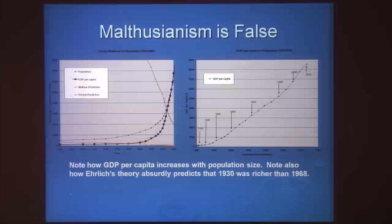Malthus was spectacularly wrong, and all who followed him equally so. Why is the theory false? It seems naively true that more people means less to go around. Well, every mouth comes with a pair of hands — but that would be a wash. Every mouth also comes with a brain. So the more people there are, the more inventors there are and the faster the rate of technological innovation. Furthermore, the more people, the greater the division of labor, the easier it is to build infrastructure, and the larger the market — making it easier to justify investments implementing new technologies. So more people means faster technological progress and economic growth.